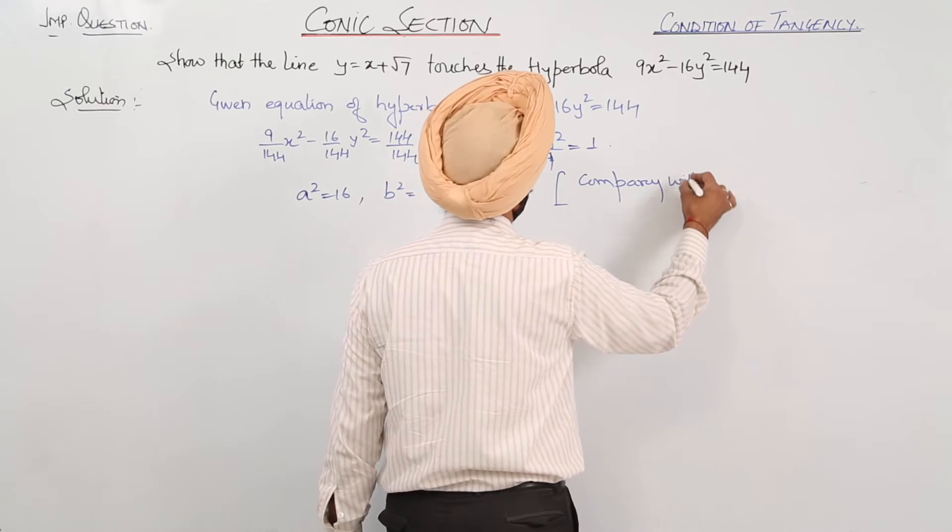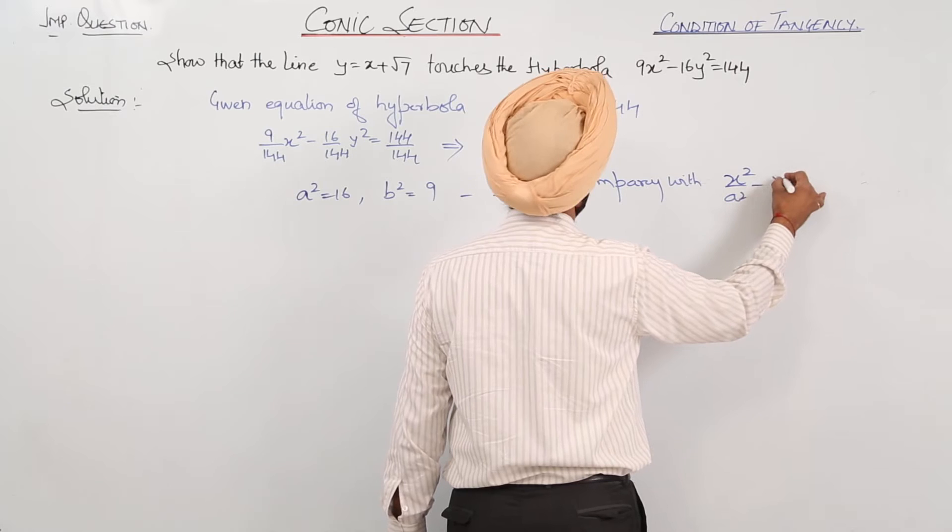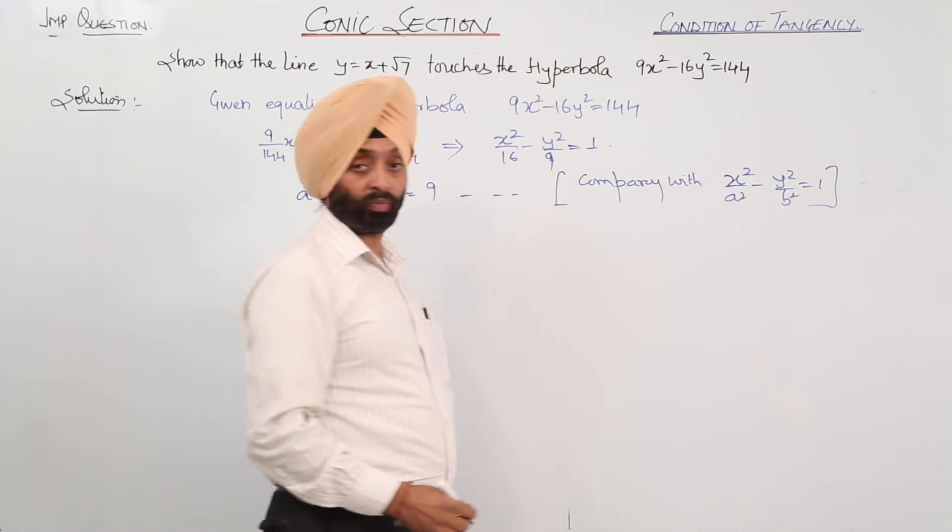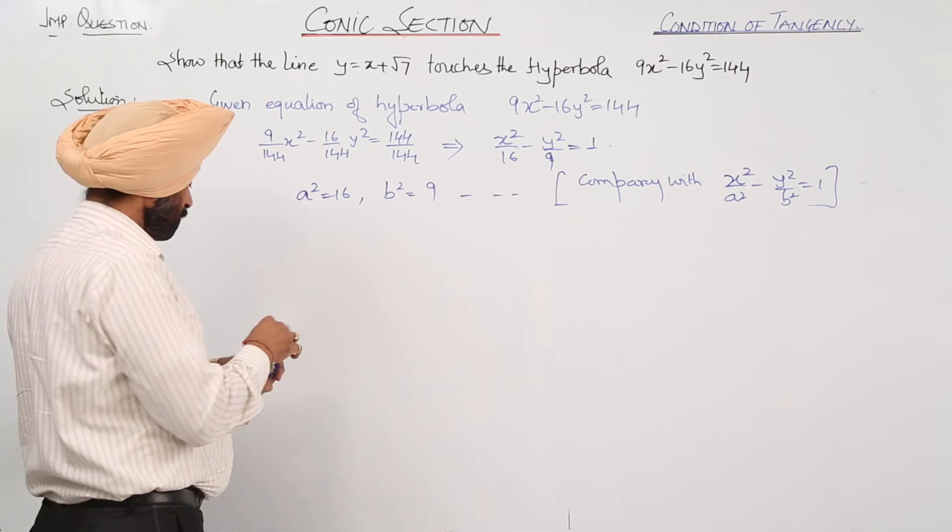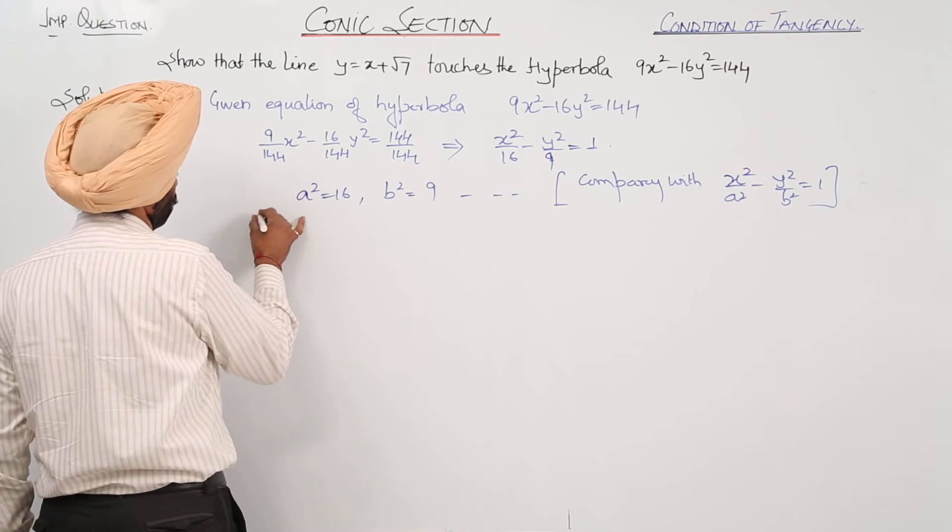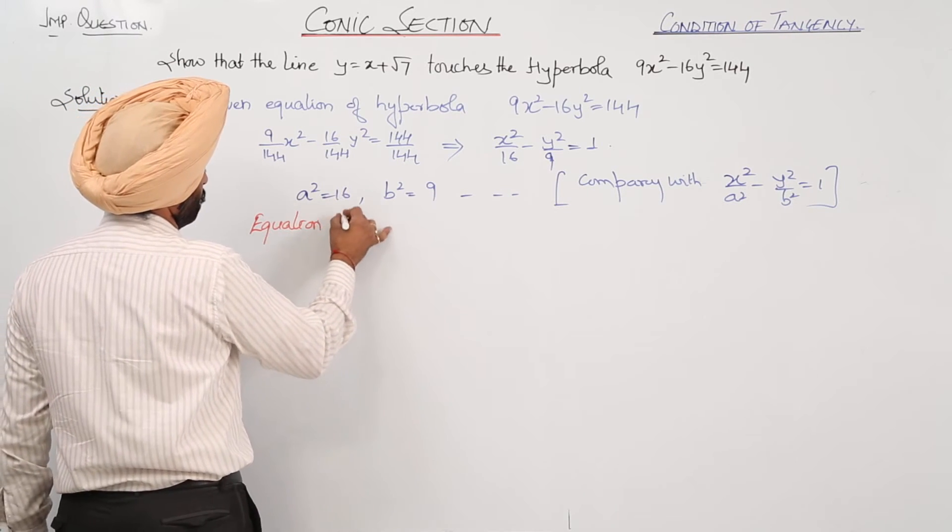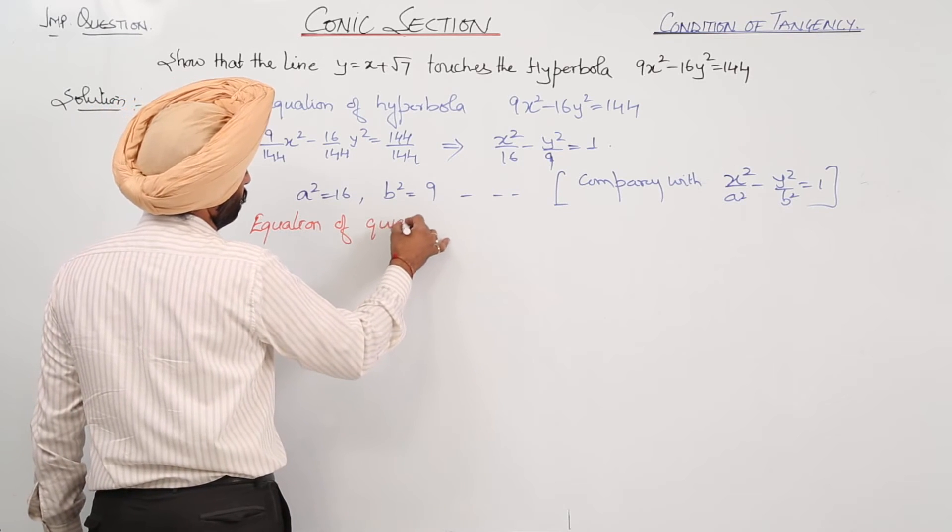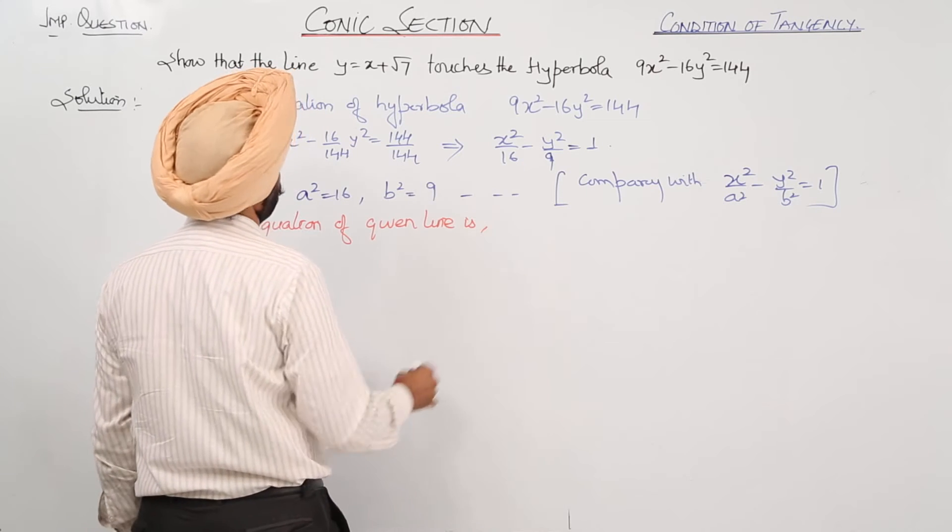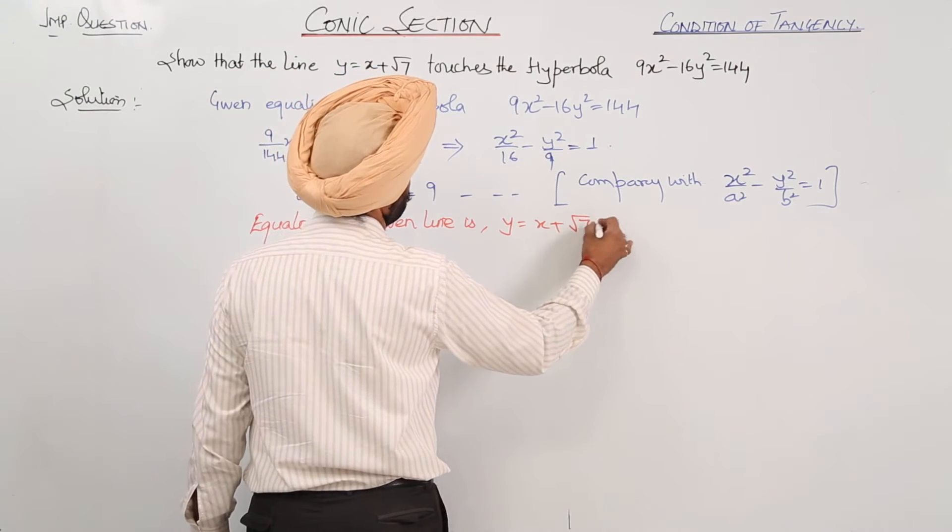Comparing with x square upon a square minus y square upon b square equals 1. Now, given line equation is y equals x plus root 7.